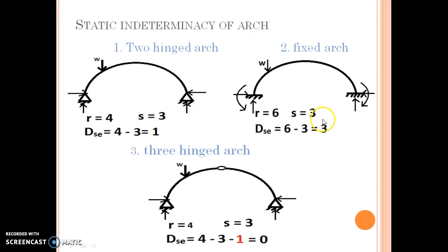Third is three-hinged arch. In three-hinged arch, two hinges are provided at the ends and third hinge is provided at the crown. This third hinge will provide an extra equation to solve this arch. So total number of external reactions is 4, total number of equilibrium equations is 3, and another extra equation is 1 given by internal hinge. So static indeterminacy external of the three-hinged arch is 4 minus 3 minus 1 equals 0. That means three-hinged arch is a statically determinate arch, that means we can solve it by using three equilibrium equations.